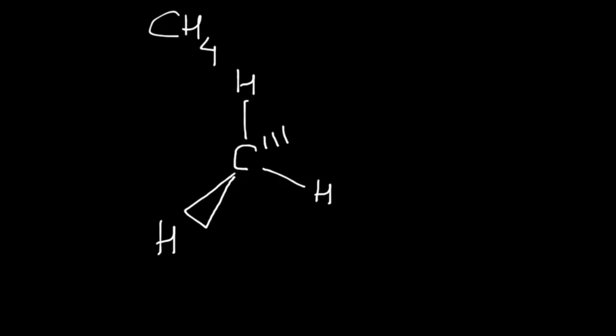One of them will be going away from us, and we show that using a dash. So if you are looking at your computer screen, then you can imagine that this hydrogen atom is behind the computer and the other hydrogen atom here is towards your side of the computer, and these remaining two hydrogens are on the computer screen. This is called the dash and wedge formula.